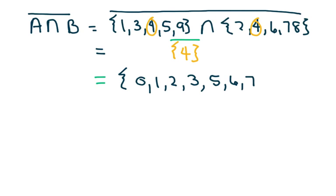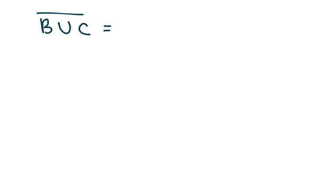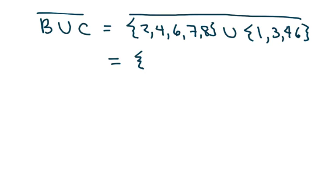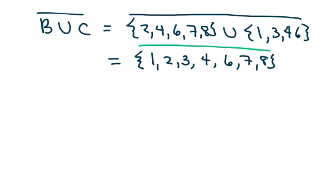Here's a similar one: we're going to do B union C and then take the complement of that. B is {2, 4, 6, 7, 8} and C is {1, 3, 4, 6}. When I put these together with union, I get {1, 2, 3, 4, 6, 7, 8}. Then I take the complement — what's left in the universal set — and I get 0, 5, and 9.